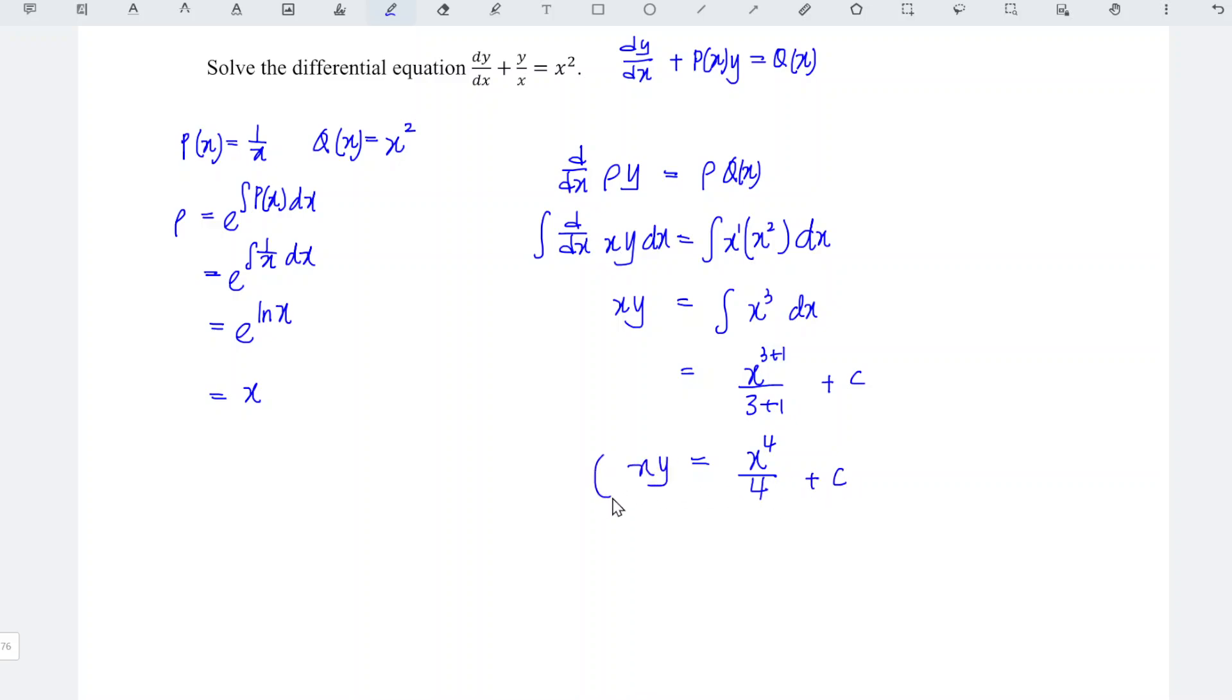And we can divide the entire equation by x. So which means that y is equal to x to the power of 4 divided by x. We obtain x to the power of 3 over 4 plus c over x and we're done.